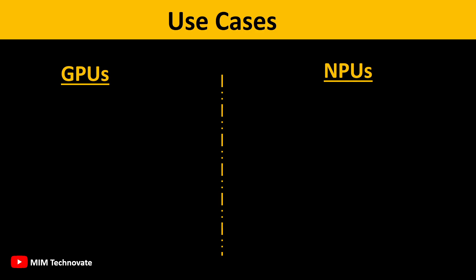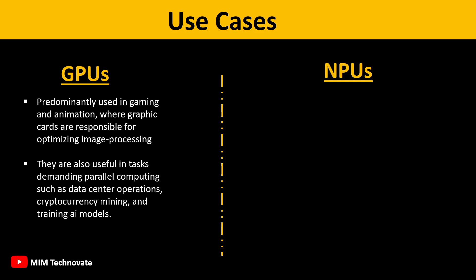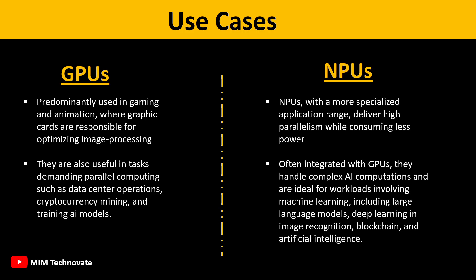Use Cases: GPUs are predominantly used in gaming and animation, where graphics cards are responsible for optimizing image processing. They are also useful in tasks demanding parallel computing, such as data center operations, cryptocurrency mining, and training AI models. NPUs, with a more specialized application range, deliver high parallelism while consuming less power.